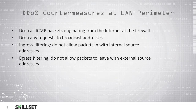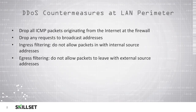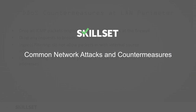You can attempt to prevent distributed denial-of-service attacks at your LAN perimeter by dropping all ICMP packets originating from the internet at the firewall, since there is no reason for external individuals to send ICMP packets to your internal network. You should also drop any requests to broadcast addresses. You can also use ingress and egress filtering. Ingress filtering prohibits packets with internal source addresses from entering your network, and egress filtering prohibits packets from leaving your network with external source addresses, preventing your network from being used to attack other individuals' networks. This concludes our Common Network Attacks and Countermeasures module. Thank you for watching.